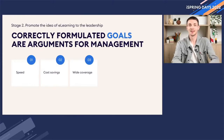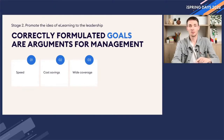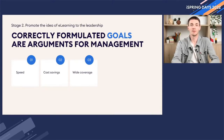Stage 2: promote the idea of e-learning to the leadership. Correctly formulated goals are favorable arguments for management. To protect the e-learning project, you need to conduct a study on how employees are trained now, how much time and money is spent on it, and how e-learning will help. The goals outlined above become the main arguments in your favor.